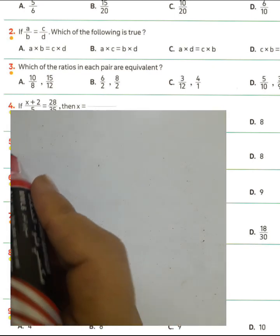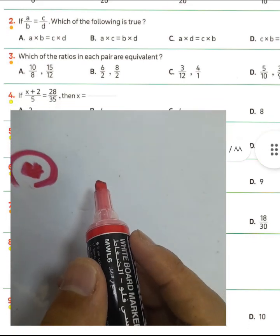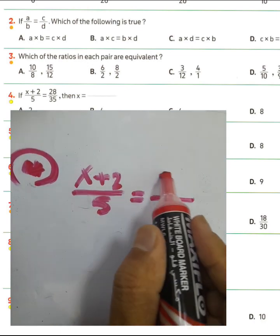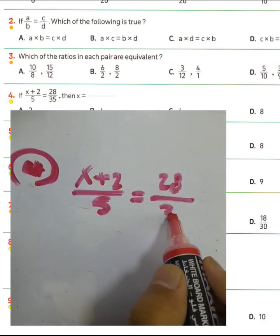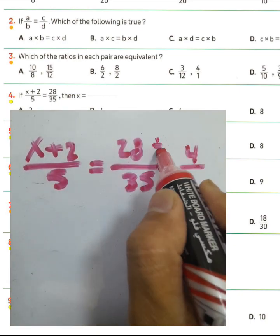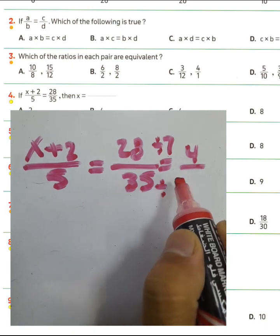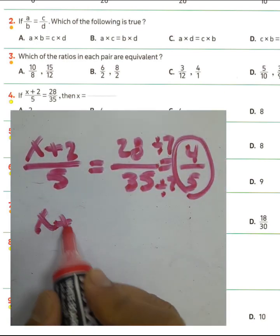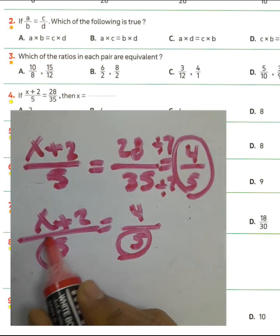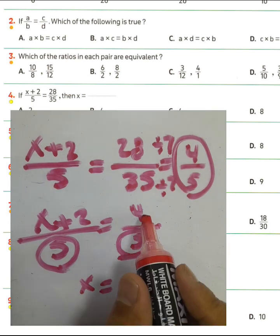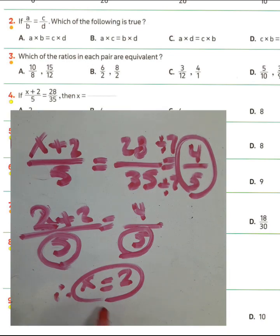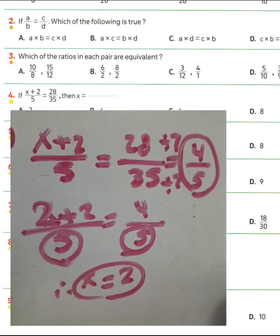Question number four: we have x plus 2 over 5. We can simplify the fraction 28 over 35 by dividing numerator and denominator by 7: 28 divided by 7 equals 4, and 35 divided by 7 equals 5. So the ratio x plus 2 over 5 equals 4 over 5. Since the denominators are equal, x plus 2 equals 4, so x equals 4 minus 2 equals 2. The result is 2 for question number four.